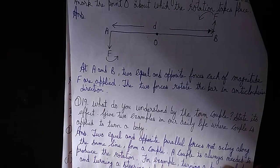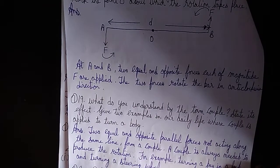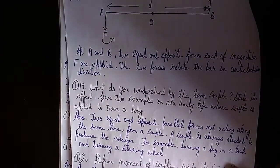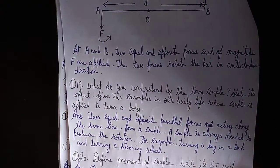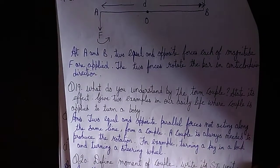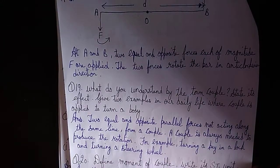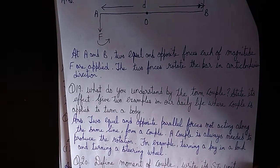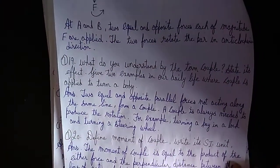What do you mean by the term couple? In our daily life, a couple is applied to turn a body — two equal and opposite parallel forces not acting along the same line form a couple. A couple is always needed to produce rotation. For example, turning a key in a lock and turning a steering wheel.